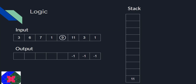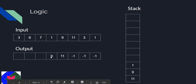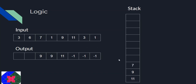For 9, the next element on the stack is 11, which is greater than 9, so the next larger element for 9 is 11. We write 11 and push 9 into the stack. For 1, the next larger element is 9, and 1 gets pushed onto the stack. For 7, we pop 1 and then find 9 which is greater than 7, so we write 9 and push 7 into the stack.